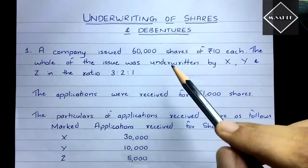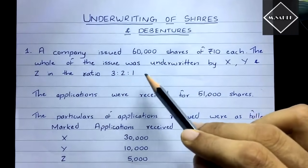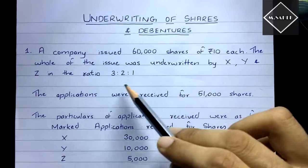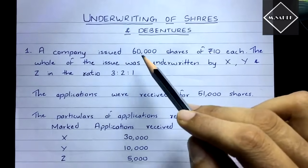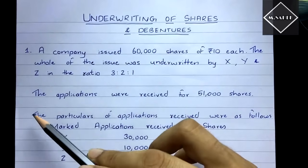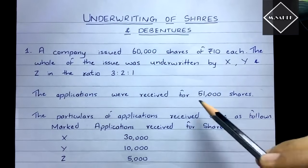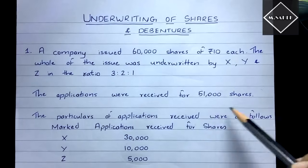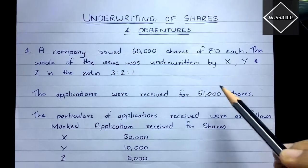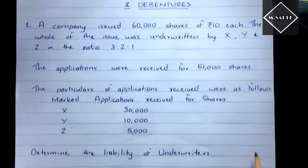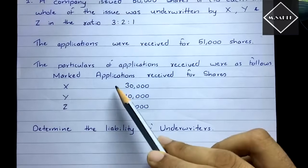The ratio is given here — percentages or direct amounts can also be given, but here ratios are given. We can easily calculate shares from the ratio on 60,000. The applications received were 51,000 shares in total.